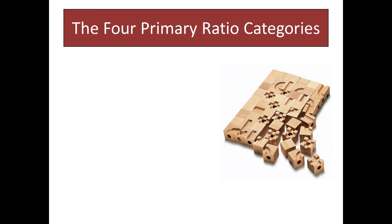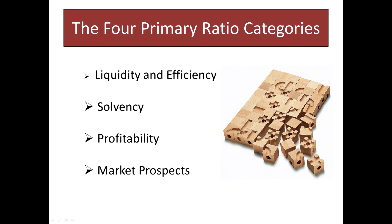There are four primary categories of ratios: those that have to do with liquidity and efficiency, those with solvency, those with profitability, and those with market prospects. Some of these we actually addressed back in chapter 13, when you did that connect assignment where you read those pages.